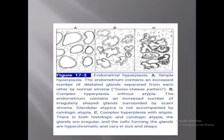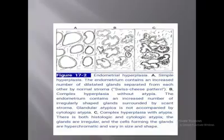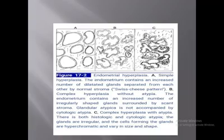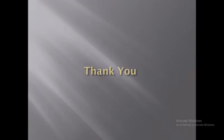In figure B, complex hyperplasia without atypia shows an increased number of irregularly shaped glands compared to simple hyperplasia, where the glands are regularly shaped. Complex hyperplasia without atypia shows glandular atypia but no cellular atypia. In complex atypical hyperplasia, there will be both glandular atypia as well as cellular atypia. That will be all for today — thank you very much.